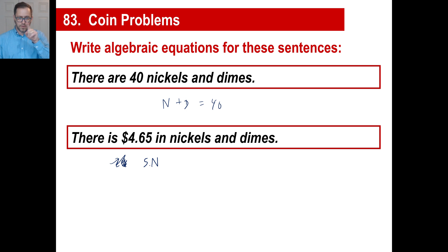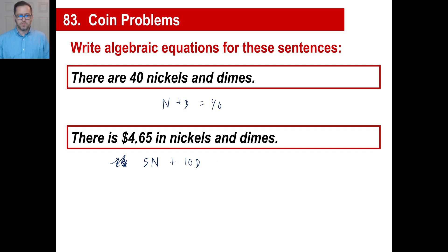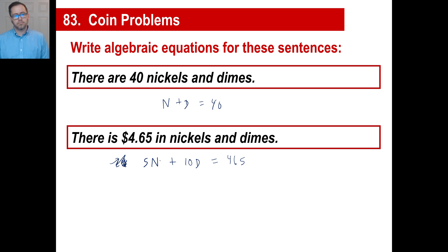And that's the way it's always going to be. It could be pennies, quarters, or half dollars — they pretty much stick with nickels, dimes, and quarters in this book. You just go: how many nickels multiplied by five, add that to how many dimes multiplied by 10, and set it equal to the total cents. That is exactly how to solve a money problem.